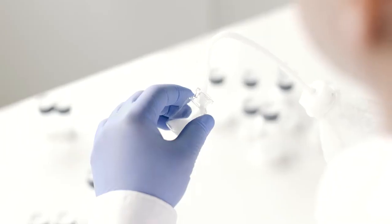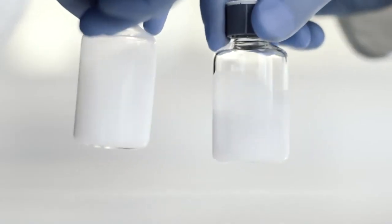One property, for example, is the barrier between the drug on the one hand side and the inner surface of the vial to avoid ion interaction of both.